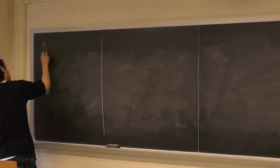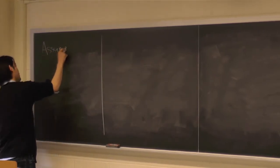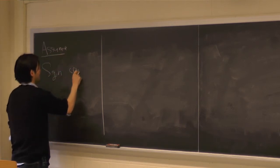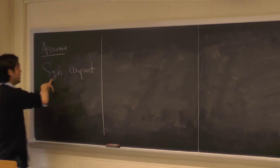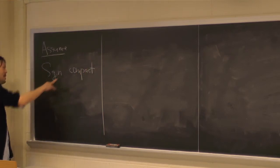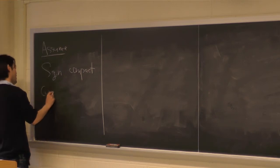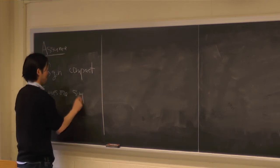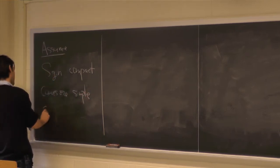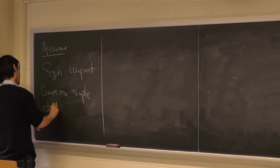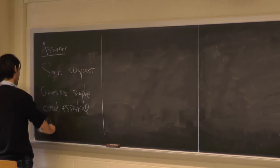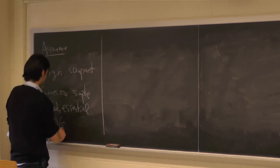Let's start with the assumptions. I always want to assume that I deal with a compact surface. G is the number of genus and N is the number of boundaries. Let's assume curves are always simple — no self-intersection, closed curves, non-trivial in pi_1, and not parallel to the boundary, not isotopic to the boundary.